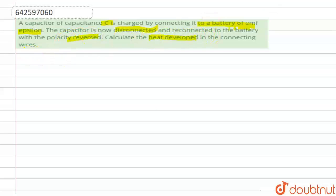So let's see the diagram. Basically what the question is saying is there is a capacitor and this is connected to a battery. Suppose this is the battery and the EMF of the battery is epsilon.